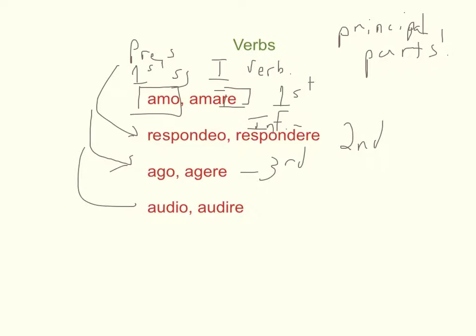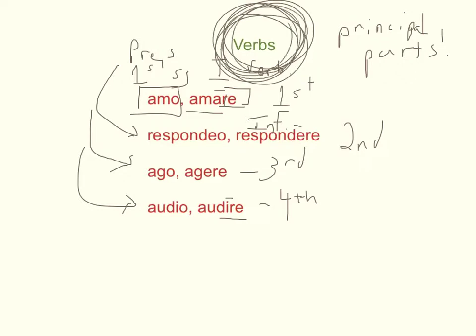And down here, first person singular, and then you get the infinitive again. And here it is audire with a long I, macron, indicating that it is fourth conjugation. So if you see a first person singular and an infinitive, you know you have a verb.